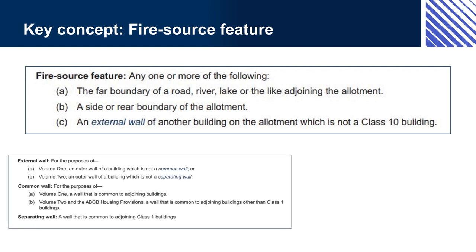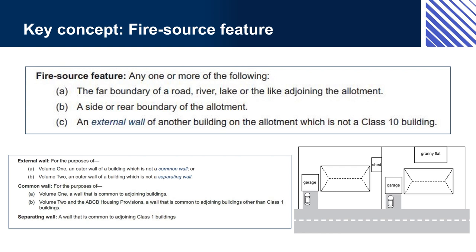A fire source feature can also be an external wall of another building on the same allotment, besides a shed, garage, carport, etc. The definition of external wall is slightly different for Volume 1 and Volume 2. Note that class 10 buildings and structures on a block are treated separately and are not included in the definition of a fire source feature. Fire source features need to be identified so that appropriate fire safety measures can be taken to prevent the spread of fire.